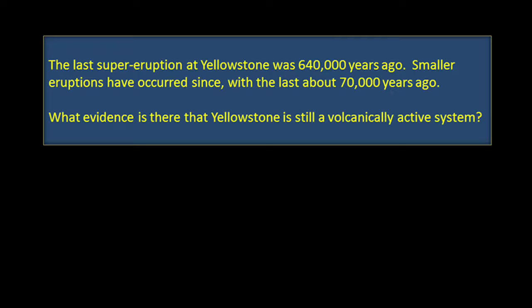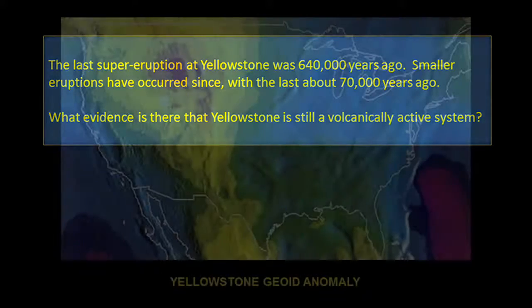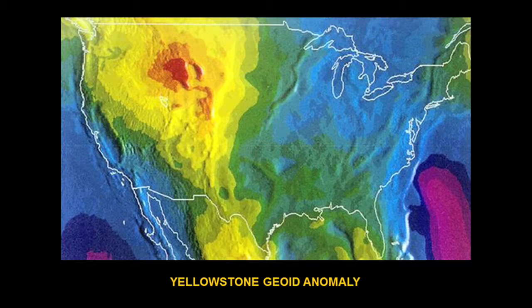So if we look at Yellowstone, we know the last big eruption was 640,000 years ago. Are we going to have another eruption? Quite likely. Is it going to be a supereruption? Well, that's what I want to talk about. The first thing to consider is: what evidence is there that Yellowstone is still volcanically active? It turns out there's a lot of evidence.